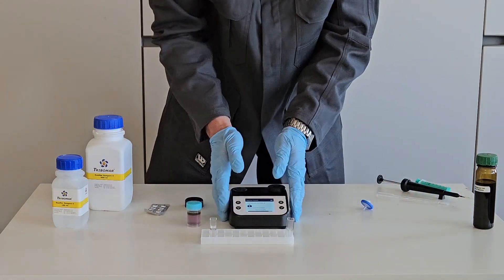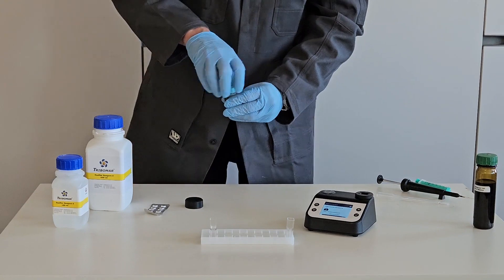For this, use a 3 ml syringe to fill in the colored water phase of the sample.